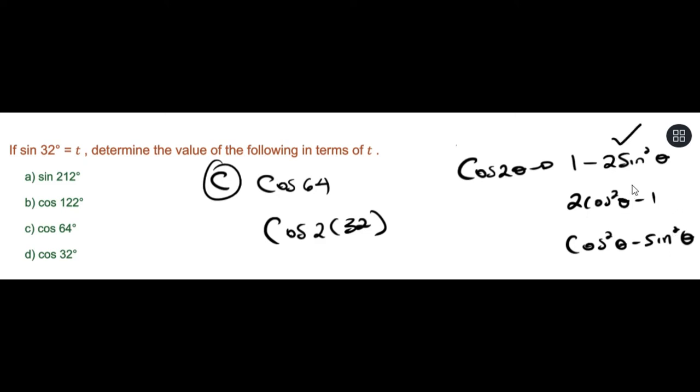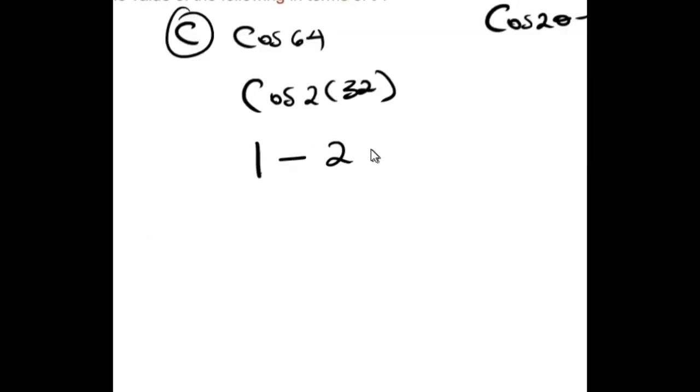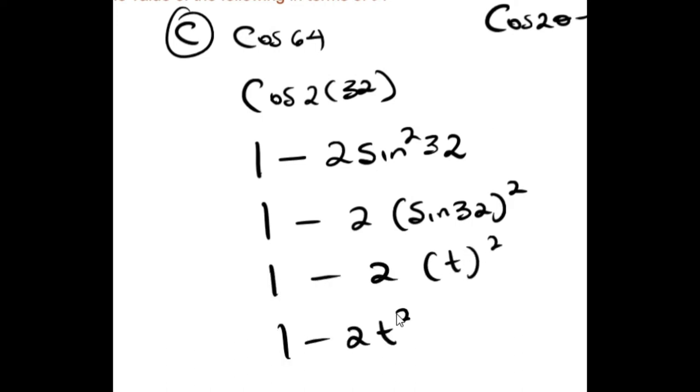only one has only sin θ, so it would be preferable to use that. We rewrite cos 2(32°) as 1 - 2sin²(32°), which means this could also be written as 1 - 2t². That will be the final answer.